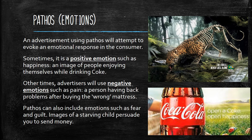Sometimes the emotional response is positive, such as happiness — an image of people enjoying themselves while drinking Coke, suggesting if you're drinking Coke, you're going to have an awesome time. Other times advertisers will use negative emotions, such as pain — a person having back problems after buying the wrong mattress. Pathos can also include emotions such as fear or guilt; images of a starving child to persuade you to send money is another example.